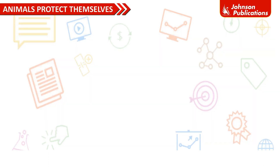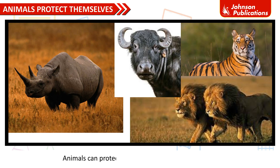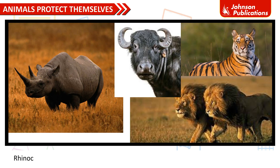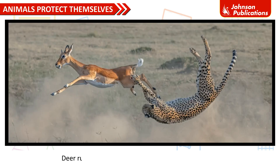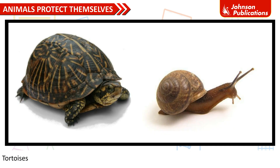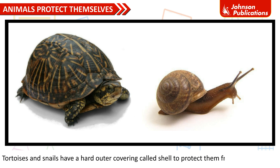Animals can protect themselves from their predators. Rhinoceros and buffaloes have sharp horns to protect themselves from lions and tigers. Deer run fast to save themselves from their predators. Tortoises and snails have a hard outer covering called shell to protect them from their enemies.